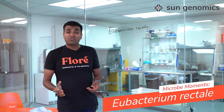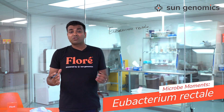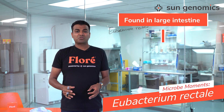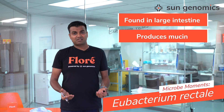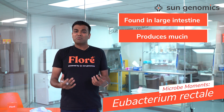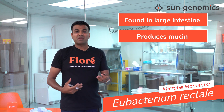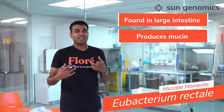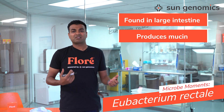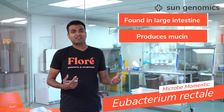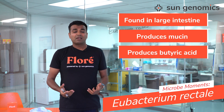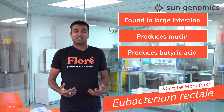This organism is found in the large intestine and it's responsible for producing some of the mucin in our gut system. That mucin helps maintain a viscosity in our intestinal system and helps things flow nicely from end to end. It also produces butyric acid, which is also helpful for maintaining a healthy gut system.